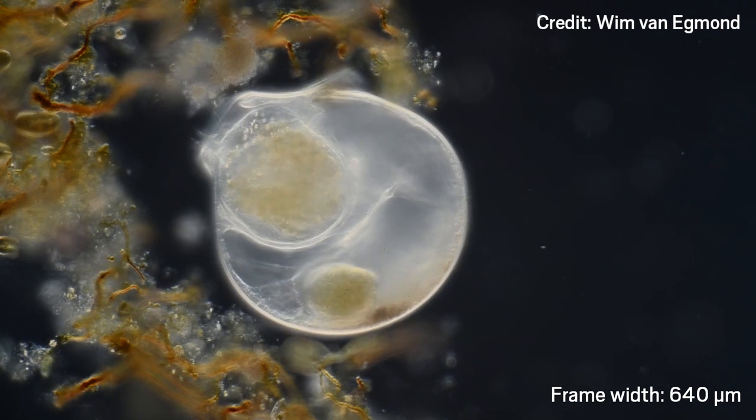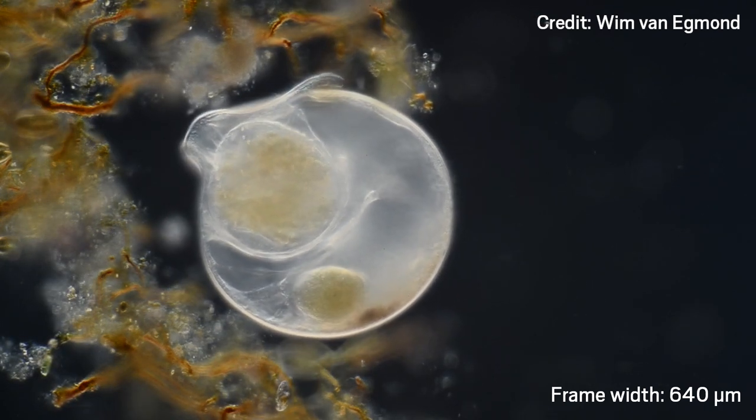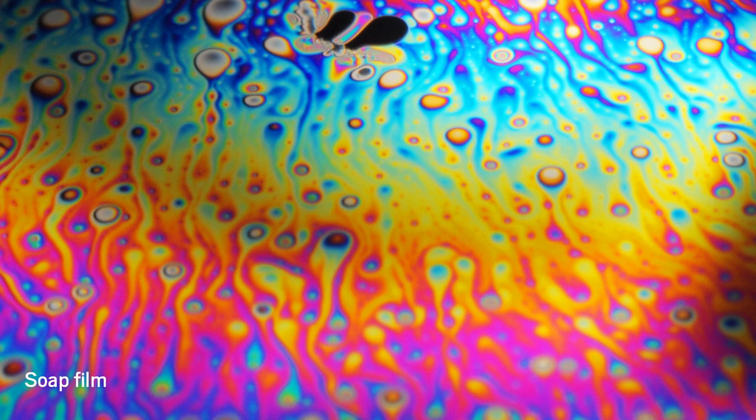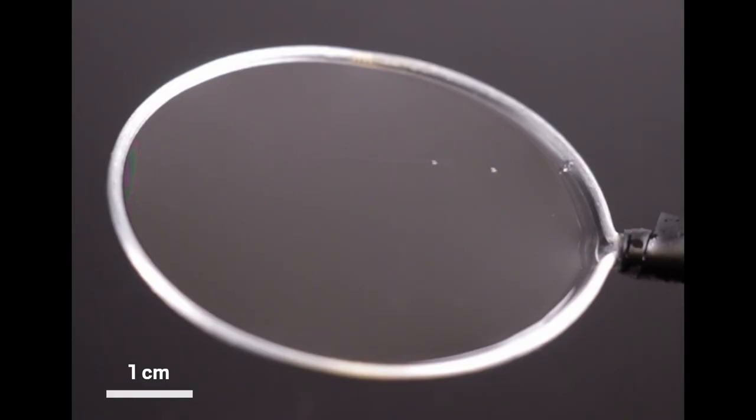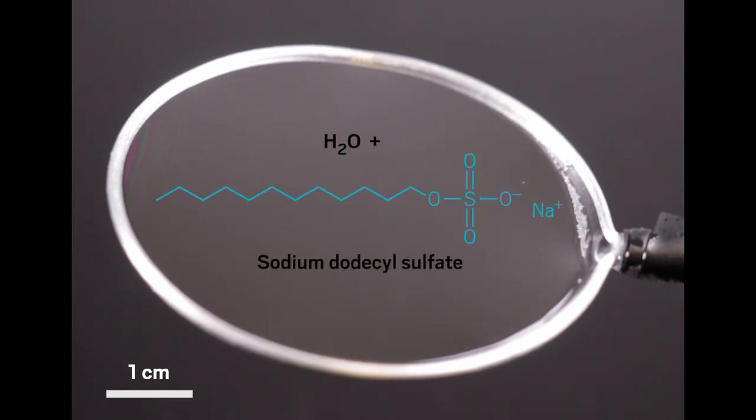Cell membranes are mostly made of water and a bilayer of surfactants, which also describes soap bubbles and films. So the researchers made simple soap films from water and the surfactant sodium dodecyl sulfate. However, these stayed intact for only about a minute.